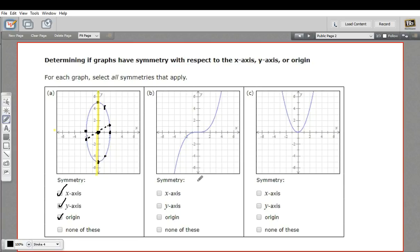Something similar is going to happen with the y-axis. If we were to fold it, we'd have a piece over here and a piece over here. They wouldn't match up. But what about origin symmetry?